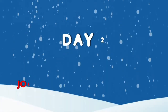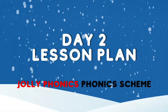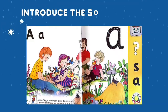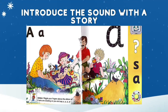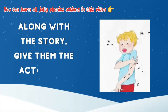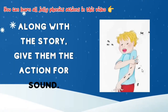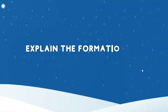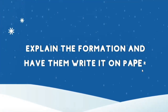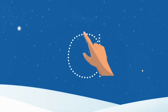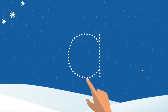This is day two. In Jolly Phonics, the second sound is letter A, so we shall introduce letter A. The steps will be the same — show the picture, tell them the story, and then show them the action as well. The action for letter A is like this: the sound is A, and you need to shake your hand as if you are throwing ants away from your arm. The next step is again to tell them the formation and have them write it on paper or board.